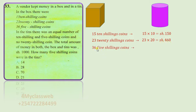Repeat the same for the 36 pieces of five-shilling coins. If you take 36 and multiply by 5, you get 180. Now to get the total amount of money in the box, we add everything to get shillings 790.